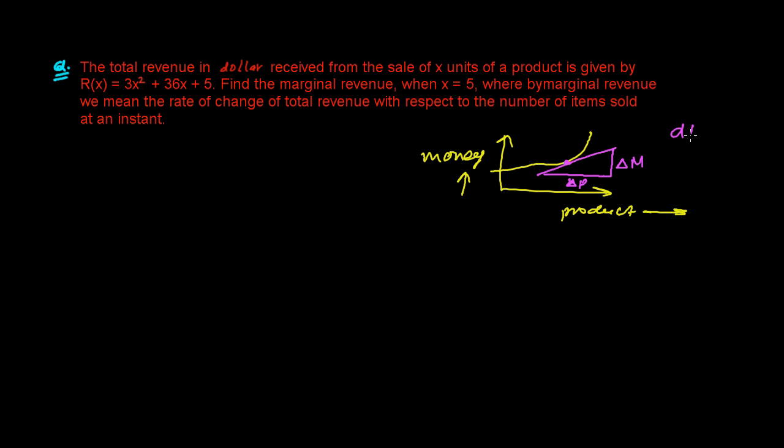So the derivative actually, DM over the D product, DP here, this is giving you the marginal cost. How much money you're selling, what is the rate of making money with respect to the product selling. That at any instant, that's a derivative actually, and that is called the marginal revenue.